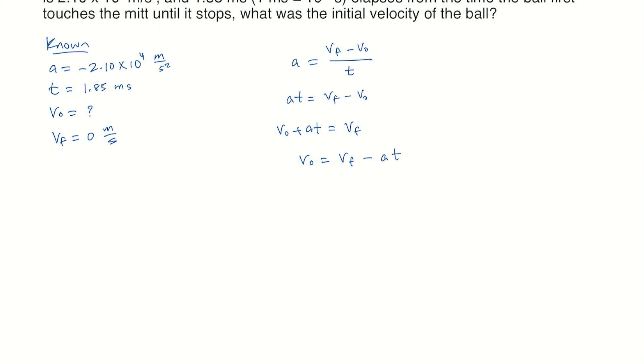Let's make our substitutions. Final velocity is 0, the ball comes to a stop, minus and now we have acceleration is minus 2.10 times 10 to the 4 meters per second squared times the elapsed time.